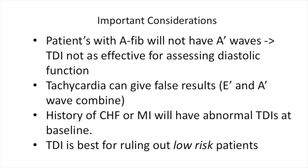These are some important considerations when using tissue Doppler imaging. Patients with atrial fibrillation will never show a normal TDI reading because A' waves will not be present. Make sure a patient is not tachycardic when getting a reading, as it can cause the E' and A' waves to fuse and give false readings. Patients with a history of congestive heart failure or myocardial infarction will always have abnormal TDIs at baseline, so this protocol will not be useful in distinguishing ischemic chest pain for these patients. TDI is best used for ruling out low-risk patients that presented to the ED with chest pain. Patients who are at high risk should be treated and monitored as standard protocol dictates.